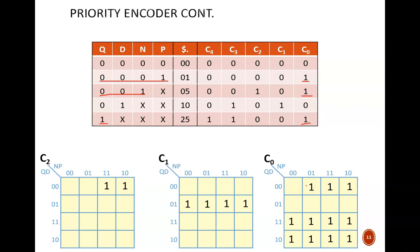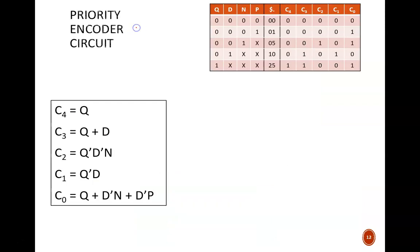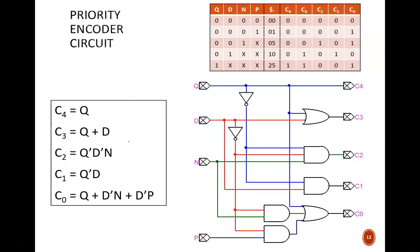When grouping this map, don't forget about the wraparound groups of 4. Those K maps provide us this set of five equations. Those equations allow us to build this logic circuit. Even though the priority encoder function sounds complicated at first, it can be built with a relatively simple circuit.